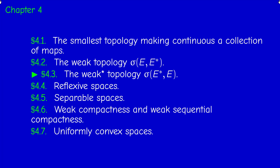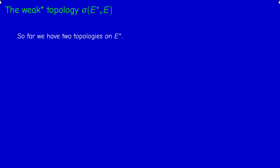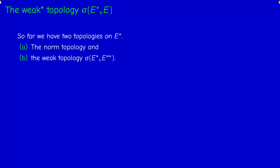What we said about E is true for any normed space E. In particular, if we apply what we said to the dual E* of a normed space E, we get the weak topology on E*. So now we have on E* two interesting topologies: the norm topology, because on E* there is an operator norm, and the weak topology, which should be denoted by σ(E*, E**).